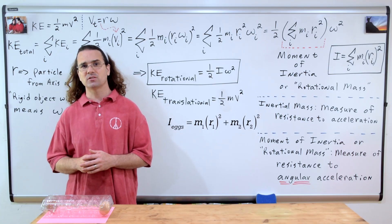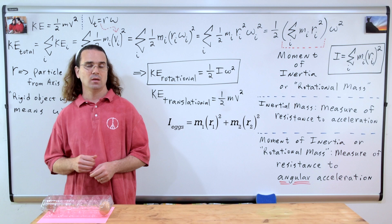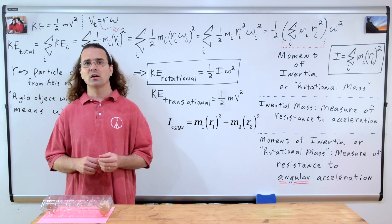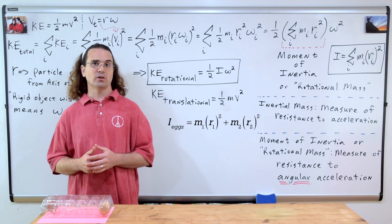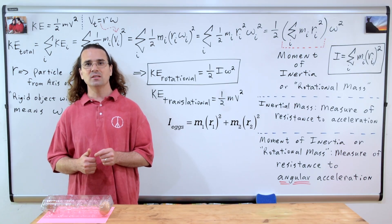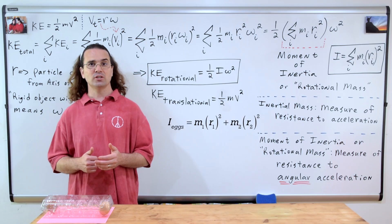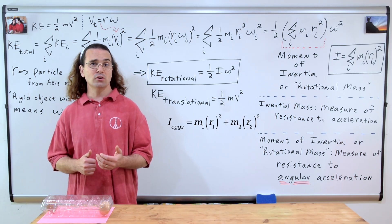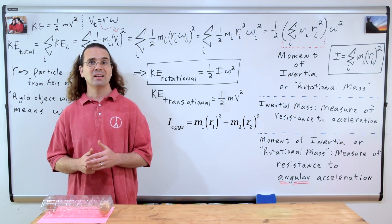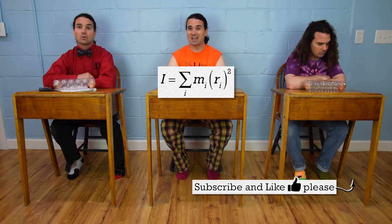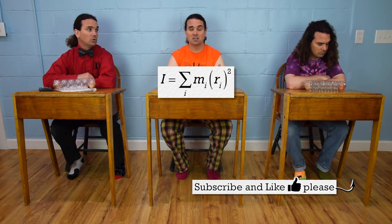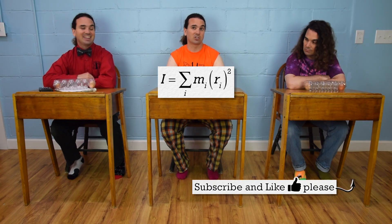It is important to realize we have not changed the mass of the system. We have only changed the locations of the masses in the system. Increasing the distance the eggs are from the axis of rotation increases the moment of inertia, or rotational mass, of the system, which makes it more difficult to angularly accelerate the system. However, the inertial mass of the system remains the same. Also notice how r, the distance from the axis of rotation of each particle, is squared in the moment of inertia equation. This means the distance each particle is from the axis of rotation has a much larger influence over the moment of inertia than the mass of each particle. If the distance from the axis of rotation is tripled, the moment of inertia is increased nine times because three squared is nine, but tripling the mass only triples the moment of inertia.